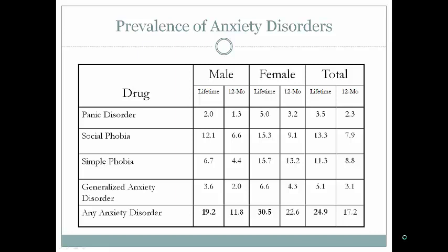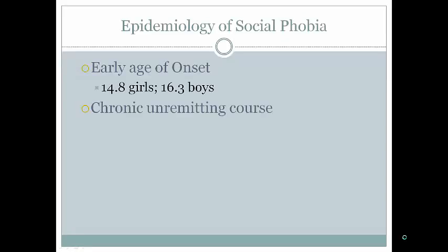Looking at lifetime and 12-month prevalences for men and women, about one quarter of the population will have experienced some sort of lifetime anxiety disorder meeting DSM criteria. Anxiety disorders are more prevalent among females than males, which could be a reporting bias or related to hormones or some gender-specific issue. The first anxiety disorder we're going to discuss is social phobia.